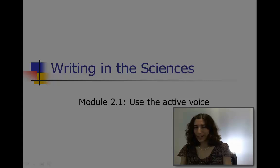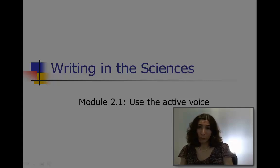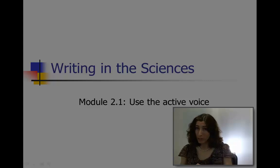Welcome to week two of Writing in the Sciences. I'm Kristen Sinani from Stanford University. Last week, we had an overview of three key principles of effective writing, and we talked about the first of those, which was cutting all the clutter — all the unnecessary words and phrases from your sentences. This week, I'm going to focus on the latter two principles, which both had to do with verbs: the use of the active voice, and writing with strong verbs, avoiding turning verbs into nouns, and keeping the main verb close to the subject near the beginning of the sentence.